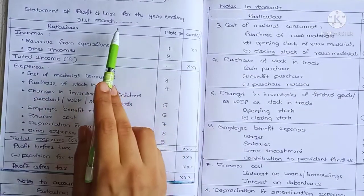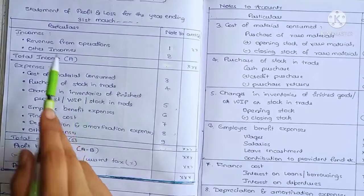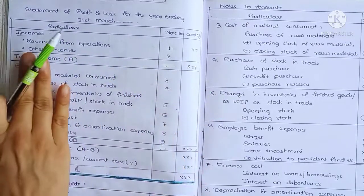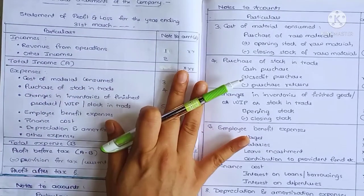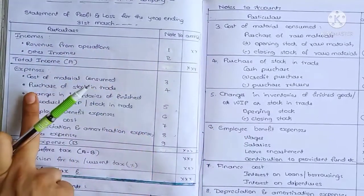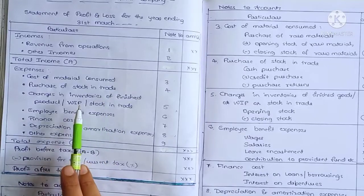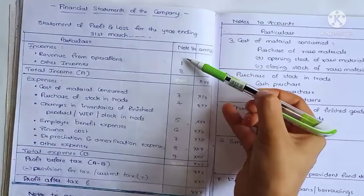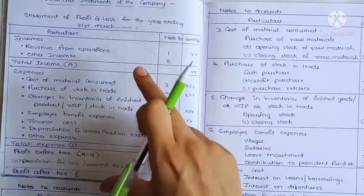You will know the Statement of Profit and Loss in the vertical format from the last video. From the credit side, the income side shows the same things — the first income is listed along with the other headings. If you want to make a statement of profit and loss in the balance sheet, you can add a note number to each heading. This is the main format.